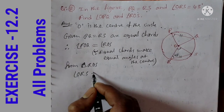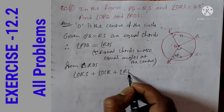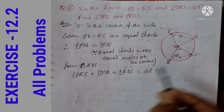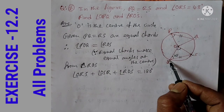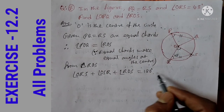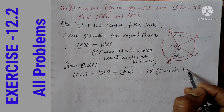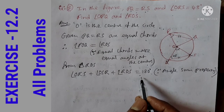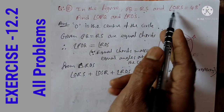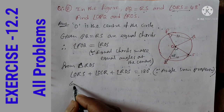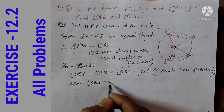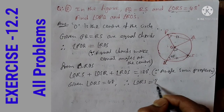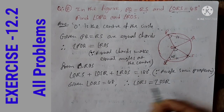Angle sum property: angle ORS plus angle OSR plus angle ROS is equal to 180 degrees. Given angle ORS is equal to 48 degrees.